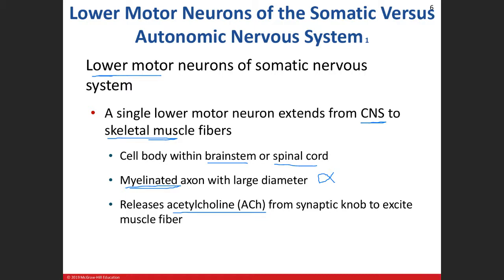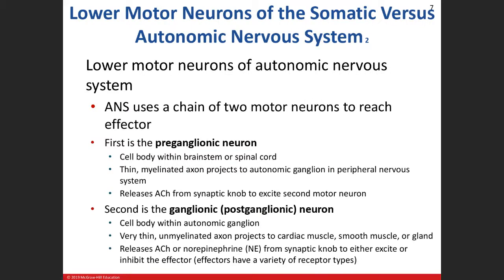When we get into the autonomic nervous system, it's a different scenario. We deal with two lower motor neurons. The preganglionic neuron's cell body is either in the brain stem or spinal cord. There are four cranial nerves that are part of the autonomic nervous system: cranial nerves 3, 7, 9, and 10. These preganglionic neurons are myelinated but thin, so action potentials will be slightly slower.